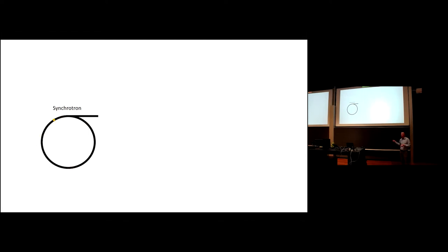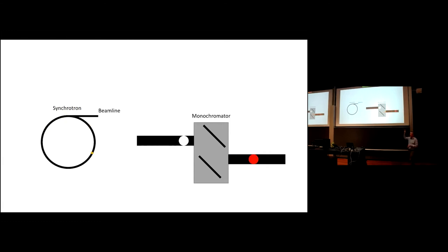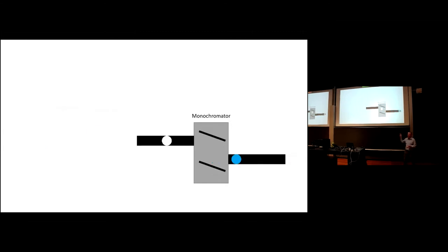To do X-ray absorption spectroscopy, you need to go to a synchrotron. A synchrotron is a facility at which electrons are accelerated almost up to the speed of light inside a ring. Every time these electrons are deflected inside the ring, highly intense X-rays are generated and sent to what we call the beamline. At the beamline, there's a device called a monochromator that only allows X-rays of a certain wavelength and thus energy to pass through to our sample. The monochromator contains two silicon crystals where you can change the angle to tune the wavelength of the X-rays, allowing us to adjust the energy that hits our sample.